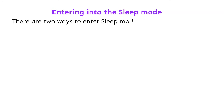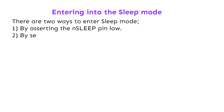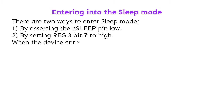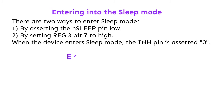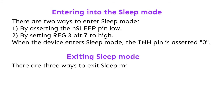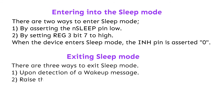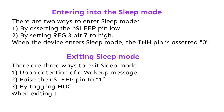There are two ways to enter sleep mode: by asserting the end sleep pin low, or by setting reg 3 bit 7 to high. When the device enters sleep mode, the INH pin is asserted low. There are three ways to exit sleep mode: upon detection of a wake-up message, by raising the end sleep pin to 1, or by toggling HDC. When exiting sleep mode, the INH pin rises.